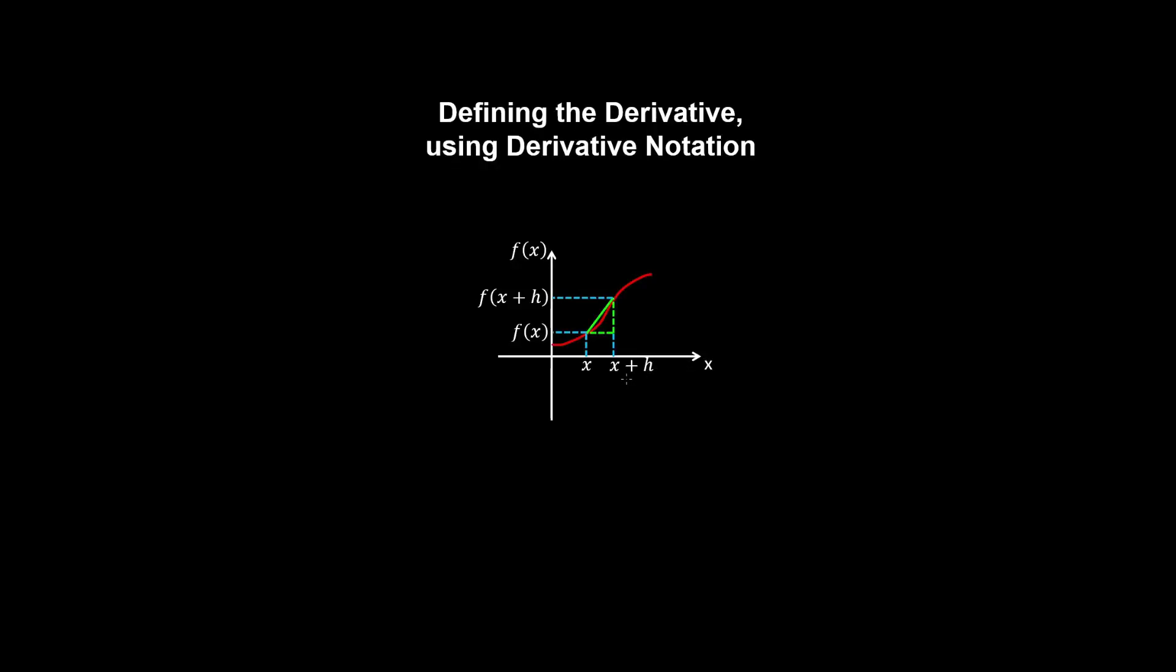Let's do a more formal definition of the derivative. So what we do first is take the average rate of change between two points, or the slope of the secant line.